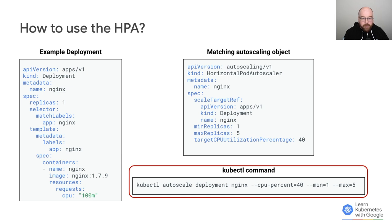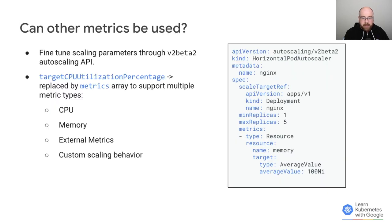Creating an HPA for your deployment is pretty easy and can be done with a kubectl command. The example here matches the autoscaling object above. One thing to note: this is using the v1 API, which has been around for some time but is also pretty limited. The v1 API covers the basic use case of CPU, but often there are other potential metrics you'd want to scale by — maybe your application is memory intensive and you want to scale by that, or there's some other metric you'd want to use.